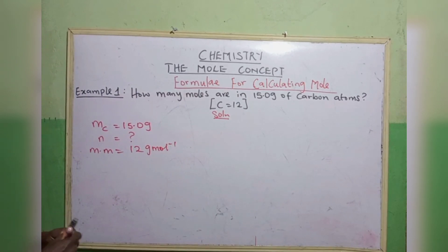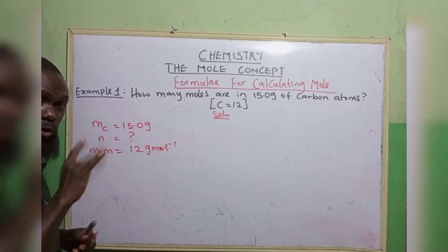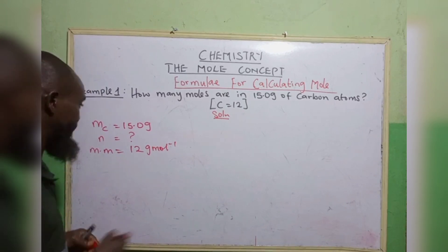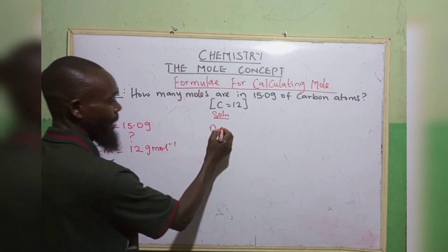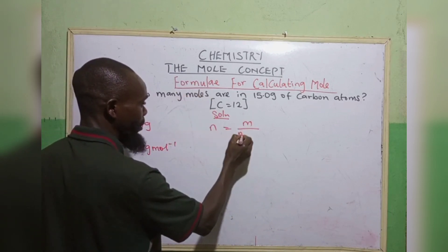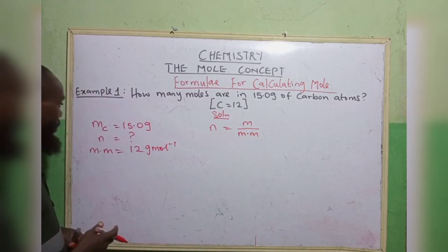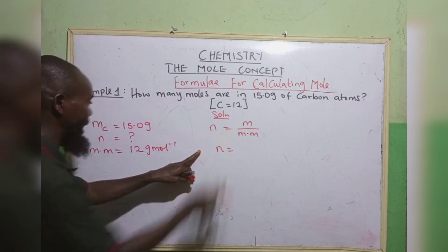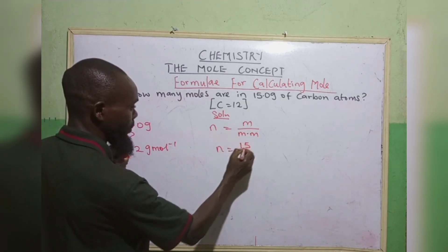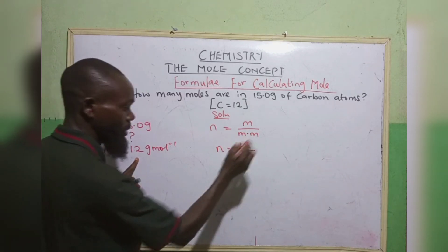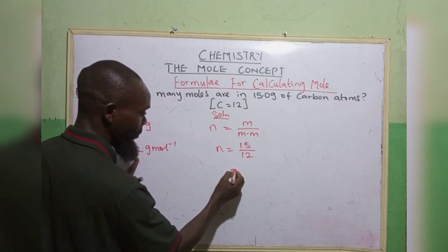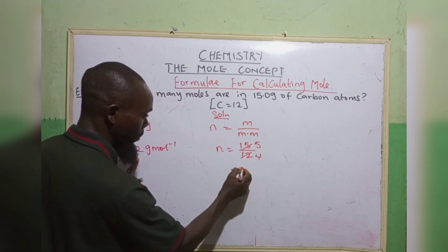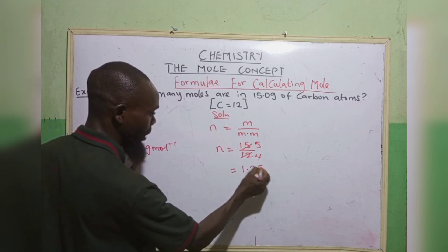From formula 1, n equals to mass over molar mass. n equals to 15 divided by 12. When you divide, we have 1.25 moles.